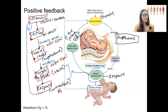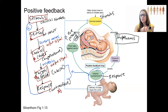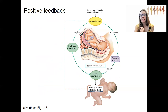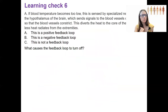That covers positive feedback for now. We won't see as many examples of this because it's not the process of homeostasis, but we will see it some. You need to be able to contrast positive feedback with negative feedback — that's a key learning outcome.